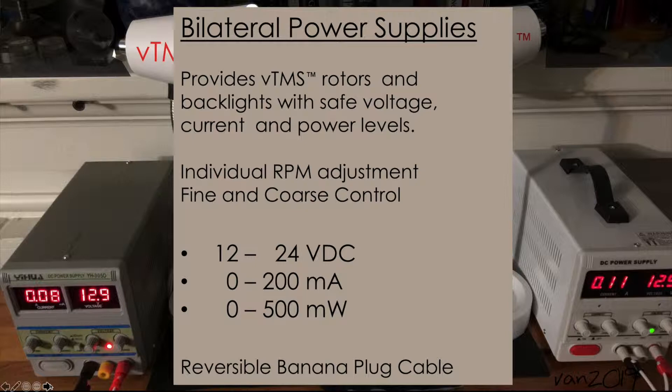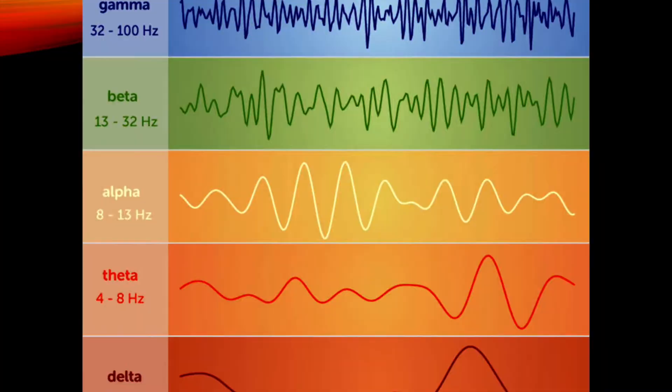There's individual RPM adjustment, both fine and coarse, as we vary the voltage from the nominal 12 to 24 volts. During that time it'll draw 0 to 200 milliamps, and if you run that, that is about a half a watt of motive power that's going into turning the magnetic fields that are produced by this array of permanent magnets. The banana plugs are reversible so that the directions of the TMS units can be reversed with respect to each other, and the rotational rates are intended to encompass all the common brain frequencies.